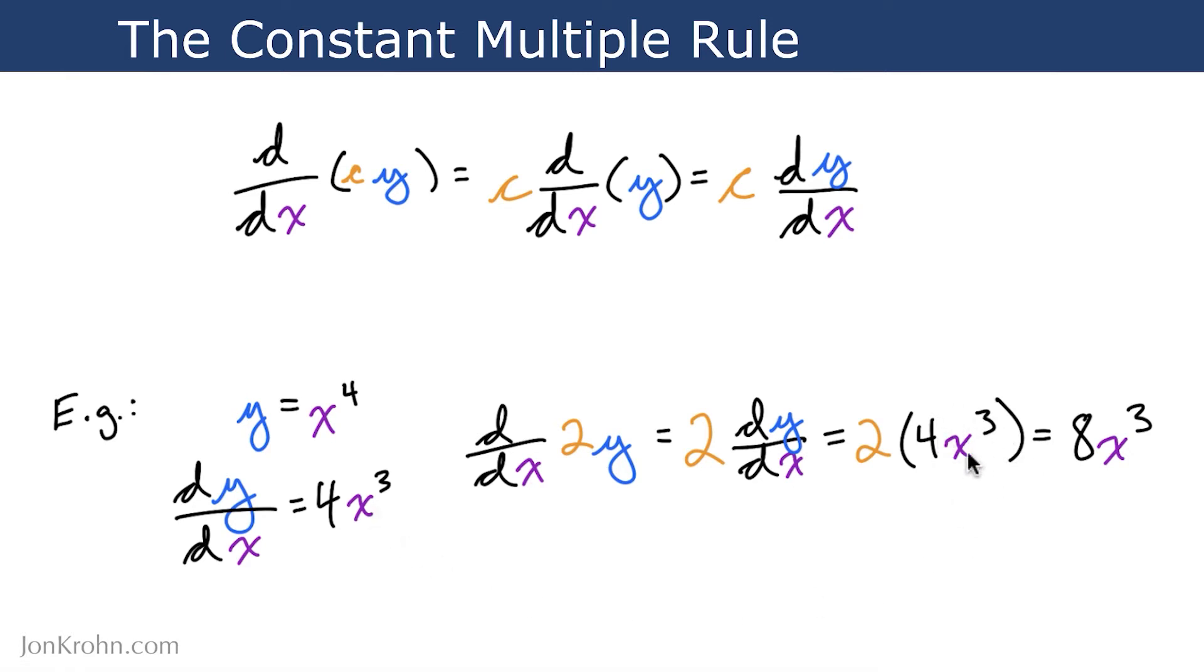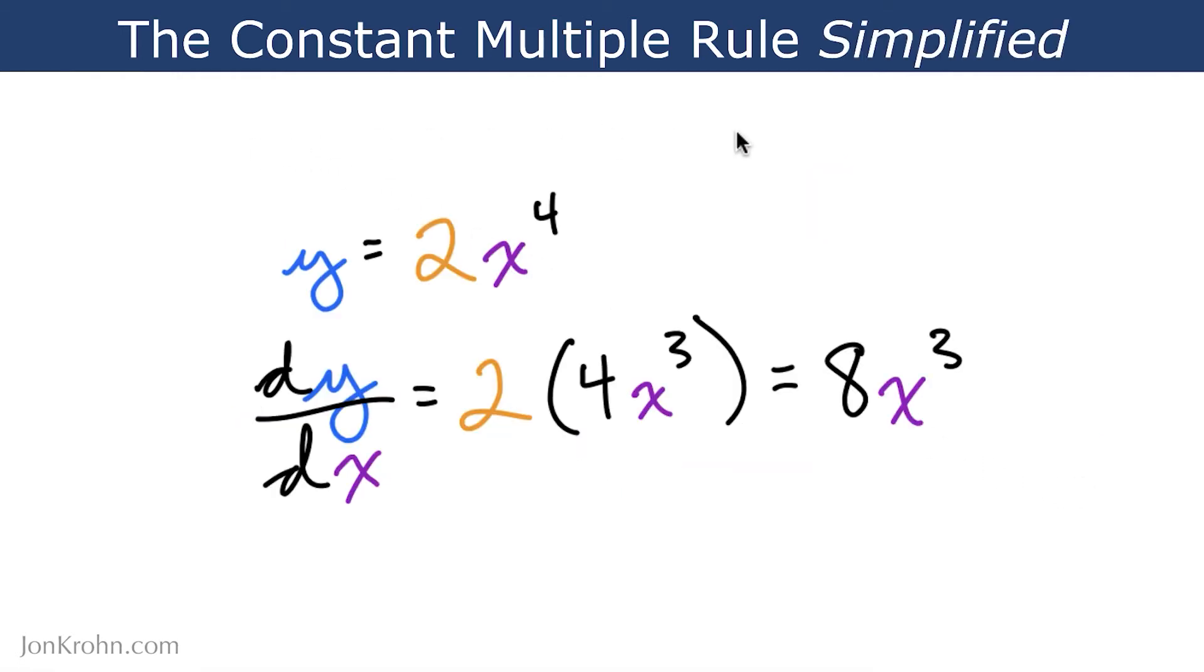And now, simple multiplication, when we bring the constant back into the picture, 2 times 4x cubed is 8x cubed. Nice. Well, if this seemed a little bit confusing, the good news is that there's another way of thinking about the constant multiple rule that is simpler.